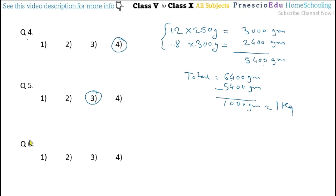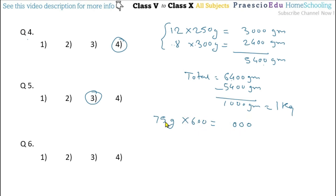Question number 6: One marble weighs 75 grams. What is the total weight of 600 such marbles? We multiply 75 by 600: that gives 45,000 grams. After dividing by 1000, it is 45 kg. 45 kg is given in option number 2.